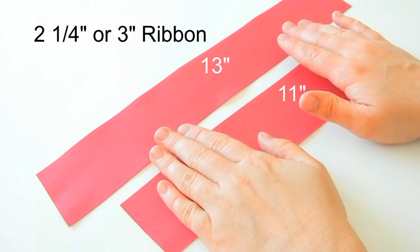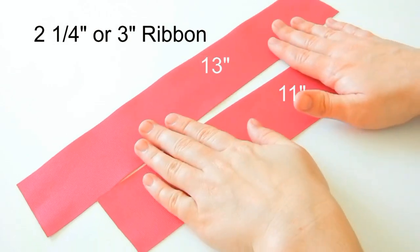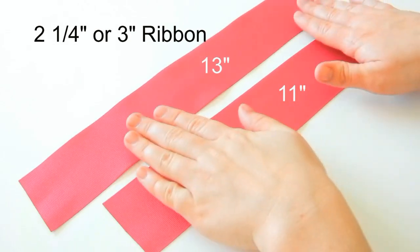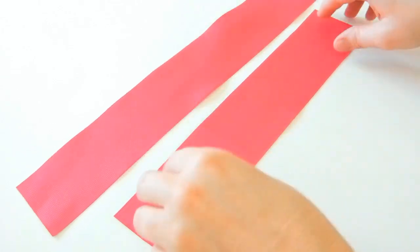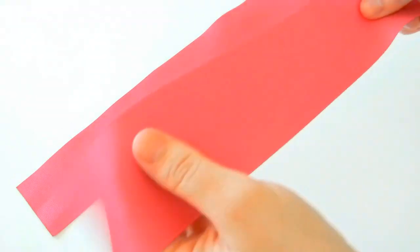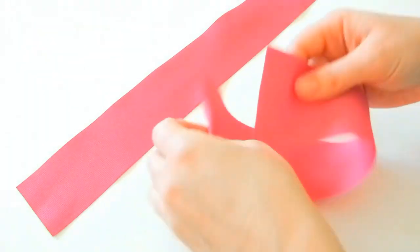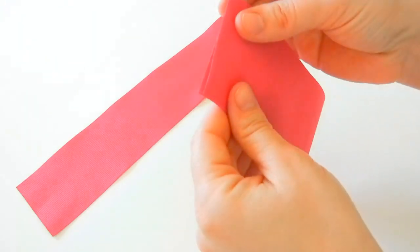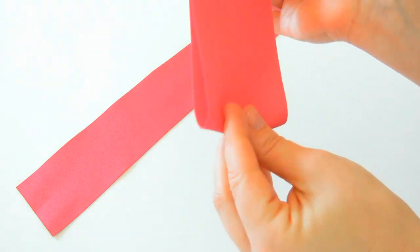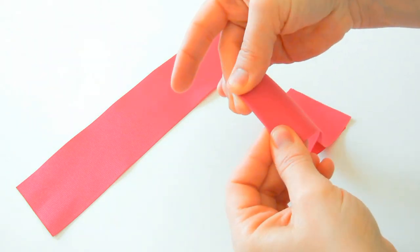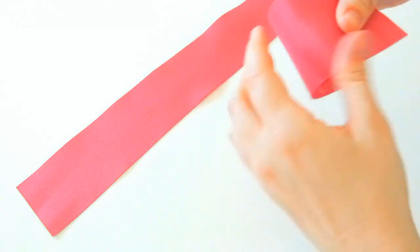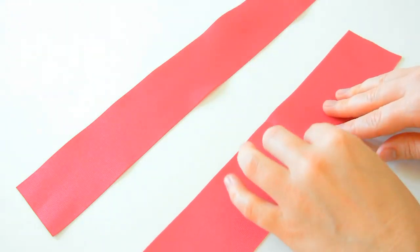This one I've cut to 13 inches and this one is 11 inches. Now we're going to create the bow and I like to fold it in half and crease the center. That way we know where the middle is.